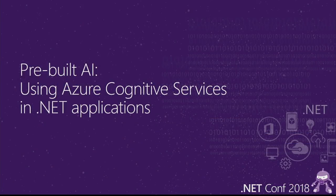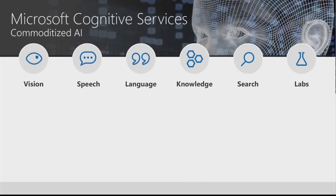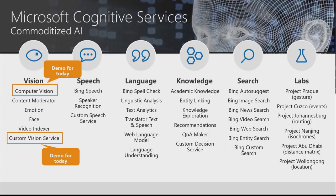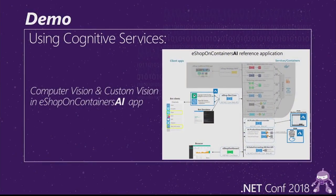Let's start with pre-built AI using cognitive services. We are providing higher-level services that you can just use and consume — like computer vision, speech recognition, or language understanding. Each of those pillars has multiple services. Today I'm going to focus on the computer vision service and the custom vision service for the demo. Let's do a demo using cognitive services — computer vision and custom vision.